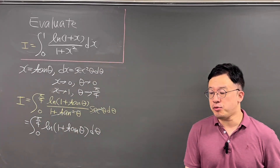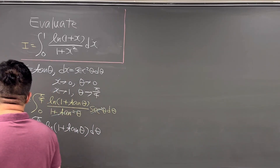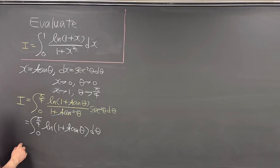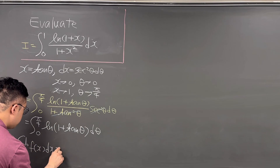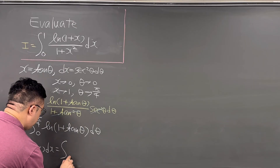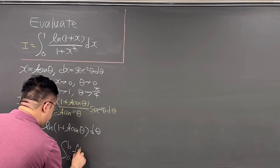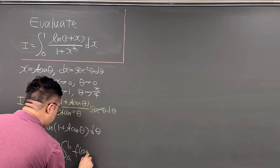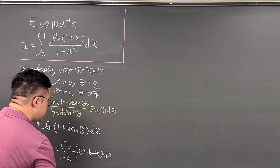Then I'll be using King's property. King's property states that the integral from a to b of f of x dx is the same as the integral from a to b of f of a plus b minus x dx.